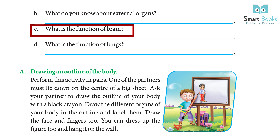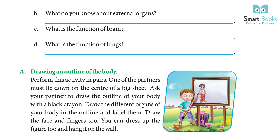C: What is the function of the brain? Answer: Our brain helps us to think. It controls all our sense organs and the way we think. It is located inside our head. D: What is the function of lungs? Answer: Our lungs help us to breathe. There are a pair of lungs located inside our chest.